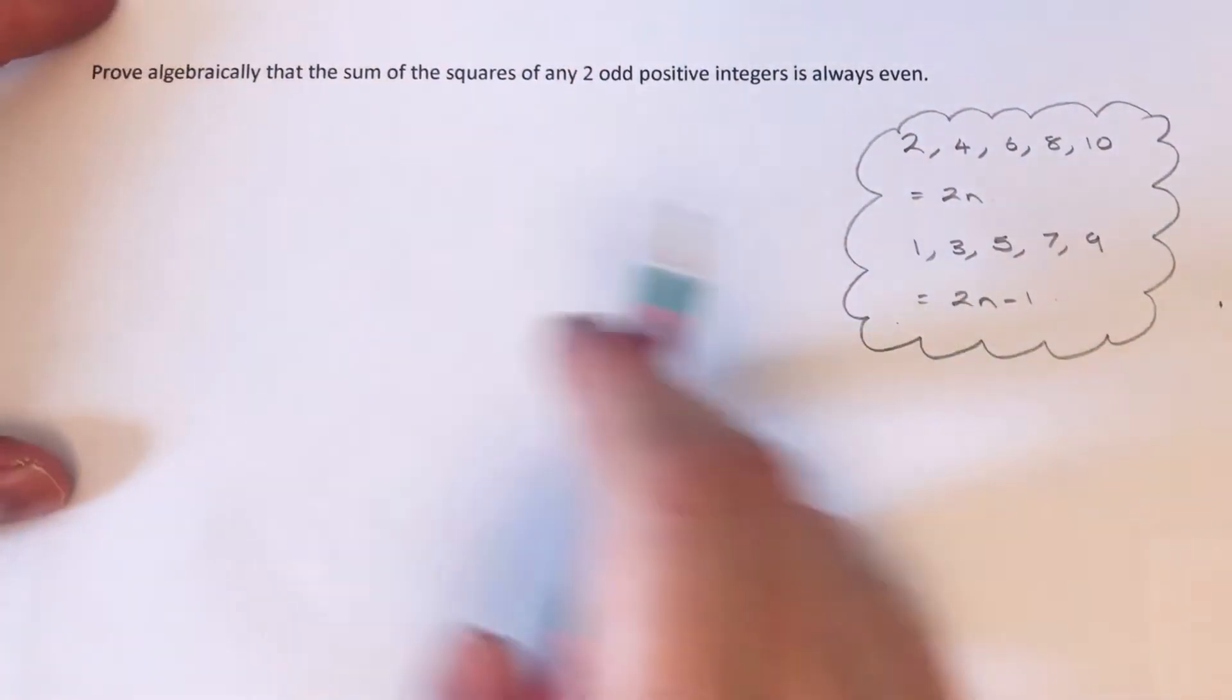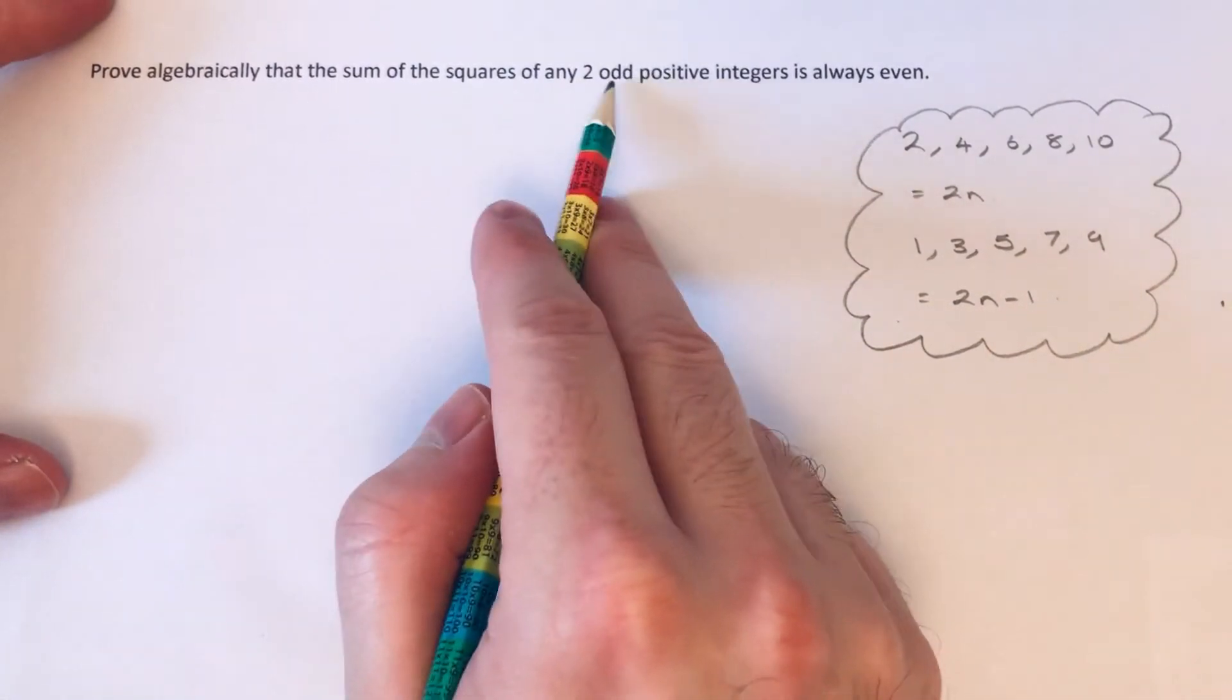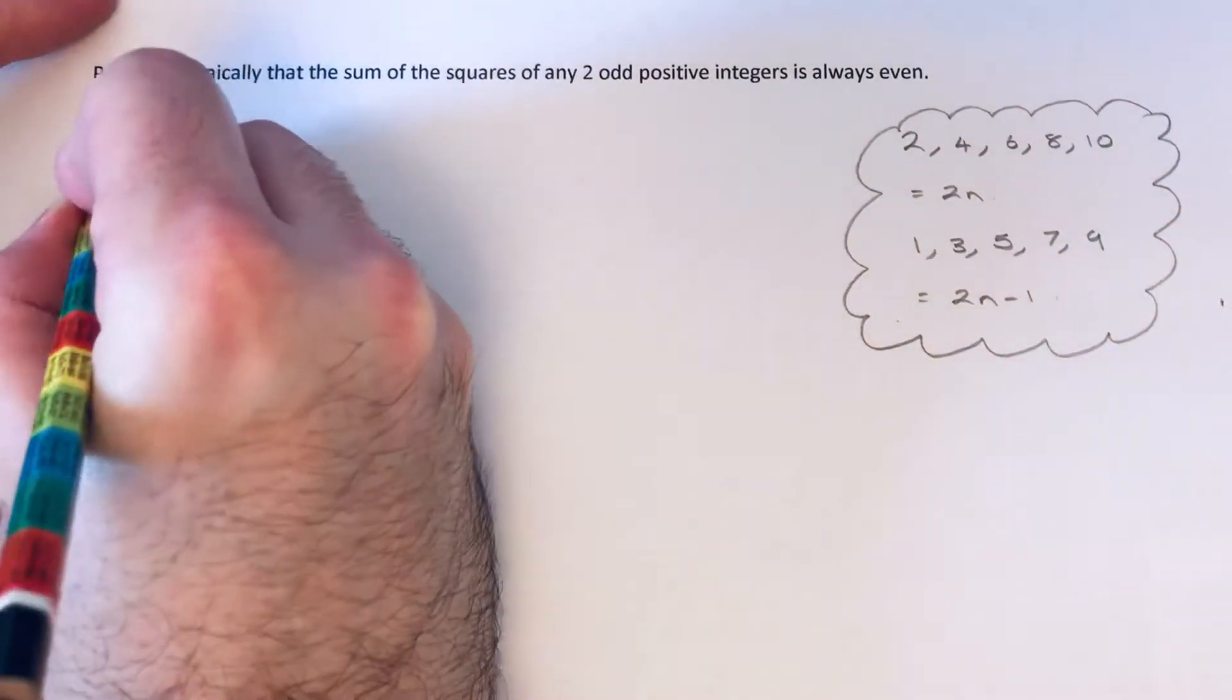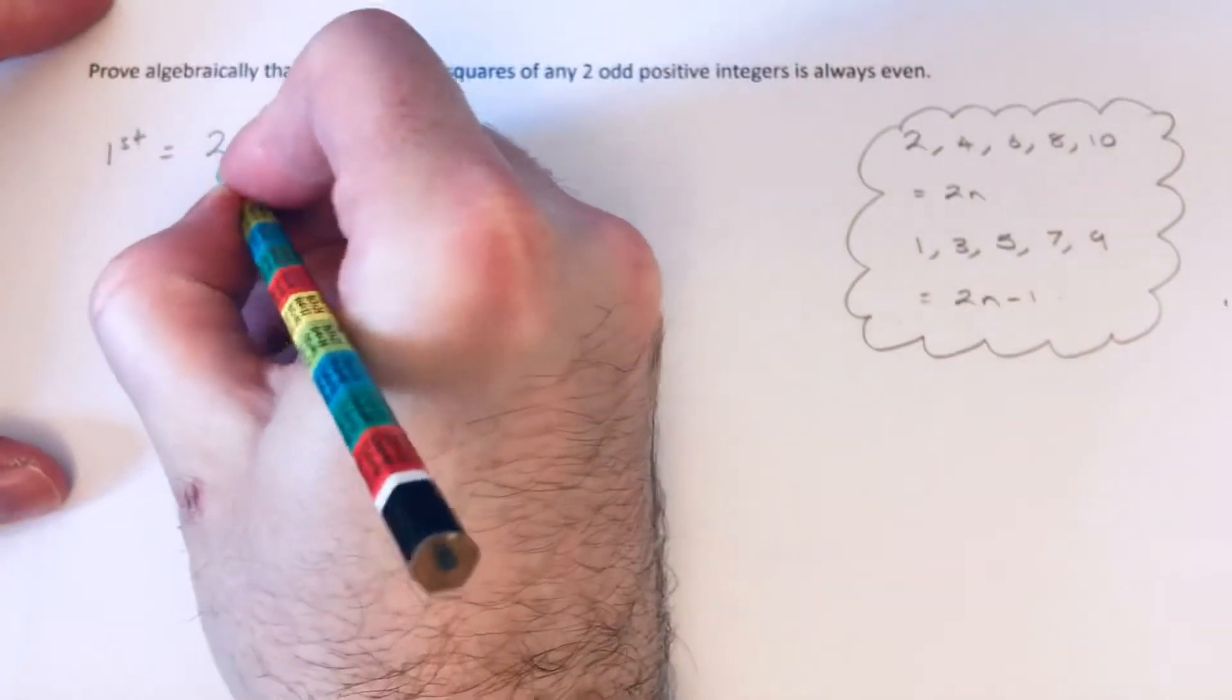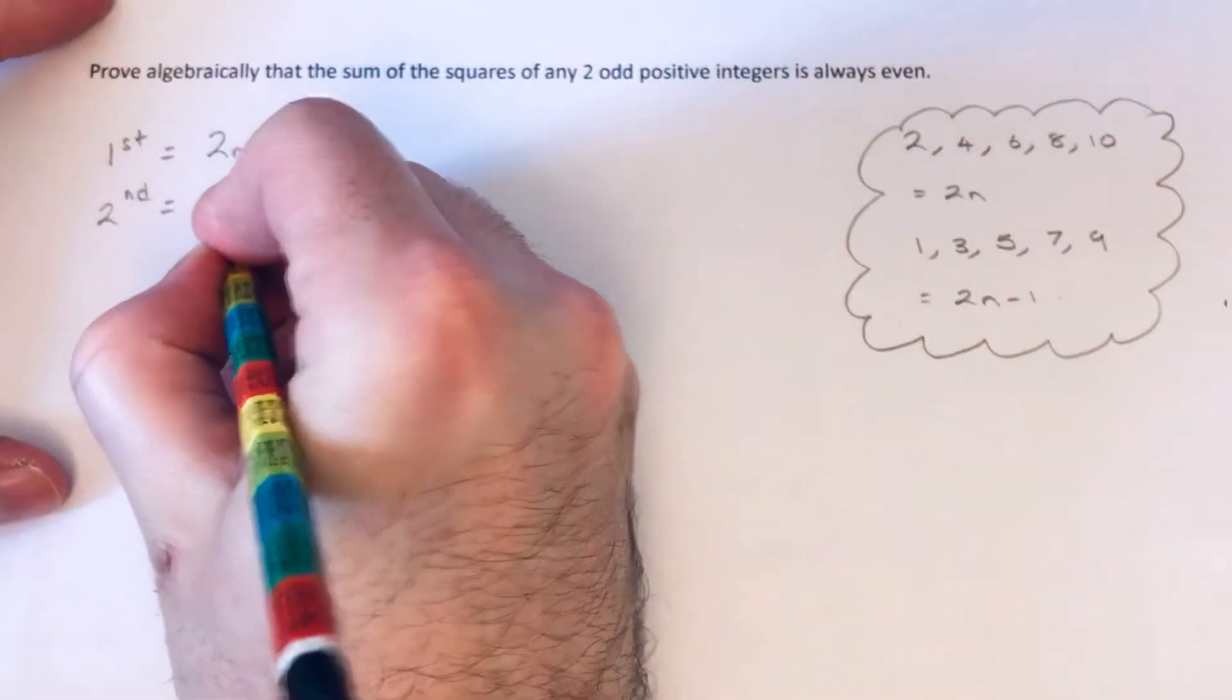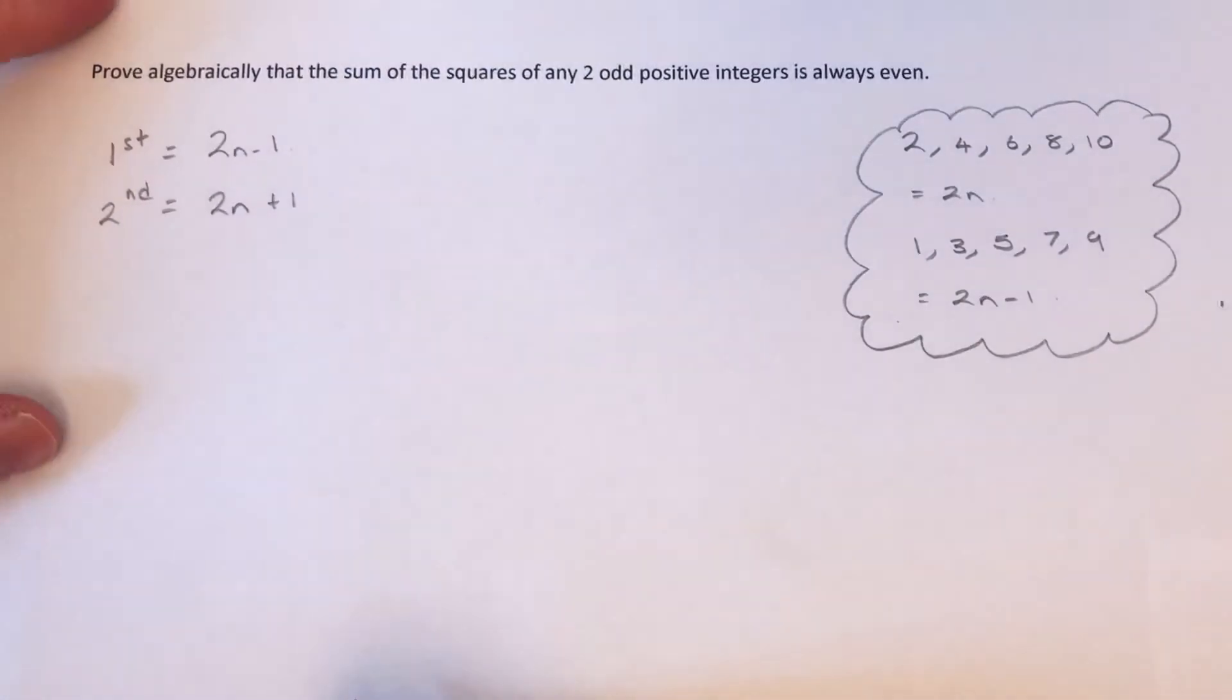We've got to prove algebraically that the sum of the squares of any two odd positive integers is always even. So we're going to call our first odd positive integer 2n minus 1, and we'll call our second one 2n plus 1. So we're just going to add 2 onto that to make it 2n plus 1.